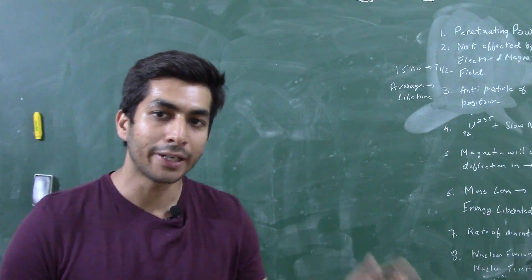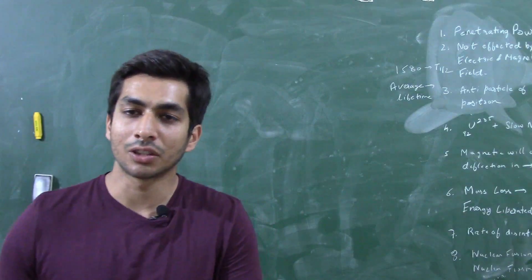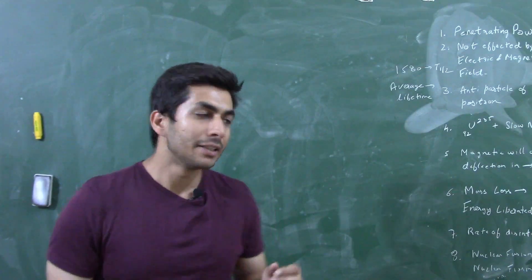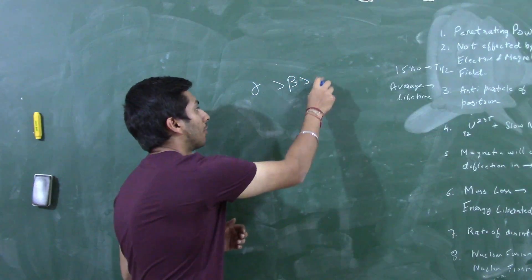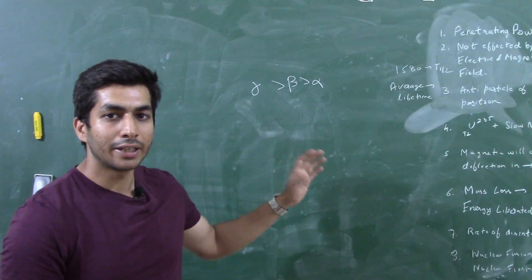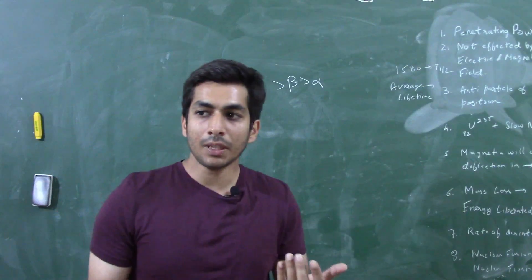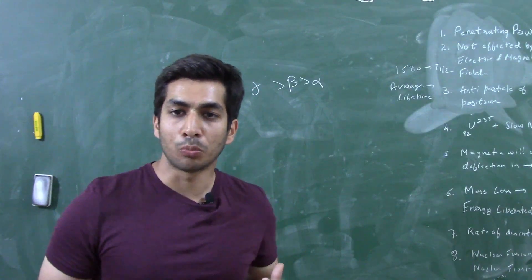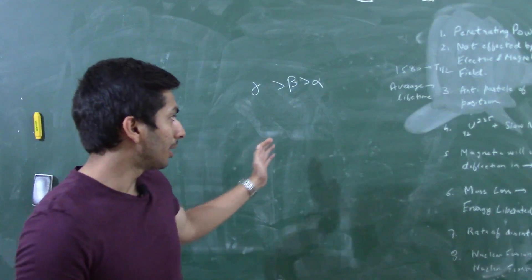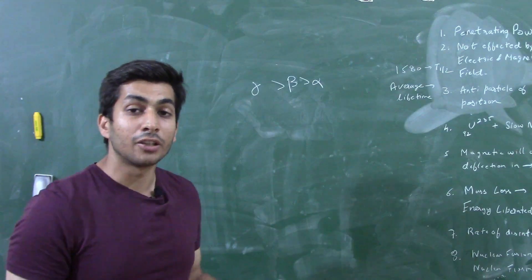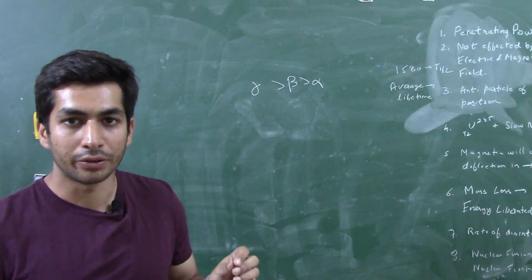The first question is about penetrating power. If alpha, beta, and gamma particles are given and they ask about penetrating power, gamma particles have the highest penetrating power, followed by beta particles, and then alpha particles. If a radioactive element enters your body, gamma particles have the tendency to cause the most damage, followed by beta particles, and then alpha particles. So gamma particles have the highest penetrating power and are the most damaging to our body.